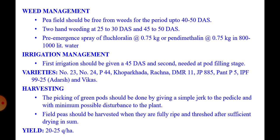Weed management: the critical crop-weed competition period is up to 45 to 50 days after sowing. Keep the field free from weeds during this period. Two hand weedings — at 25 to 30 days after sowing and 45 to 50 days after sowing — are sufficient. Besides this, we can apply herbicide as a pre-emergence spray of Fluchloralin or Pendimethalin at the rate of 0.75 kg in 800 to 1000 litres of water per hectare.